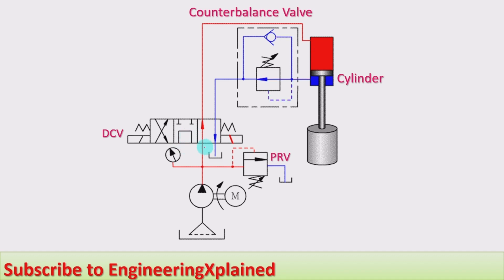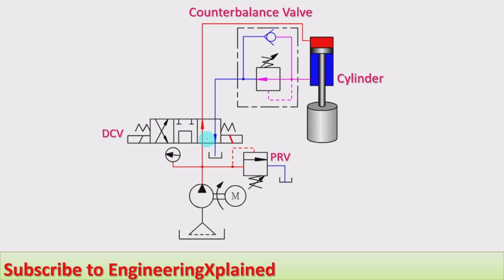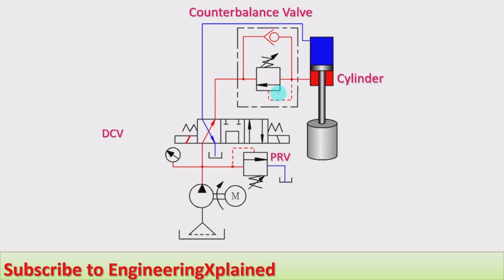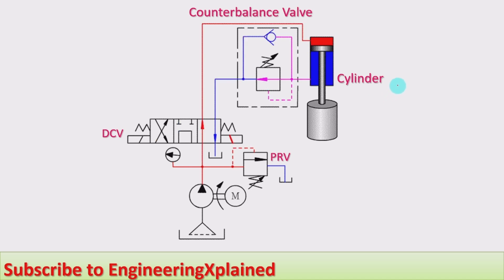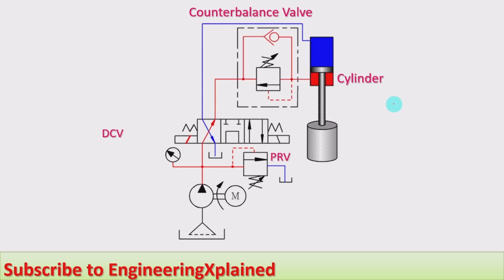When the direction control valve is at its center or neutral position, the pump is unloaded to the tank. The other two envelopes of the direction control valve operate the vertical cylinder and the counterbalance valve. When it is at the left envelope: